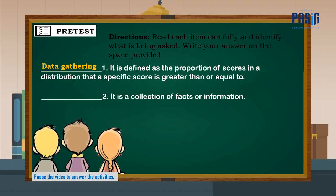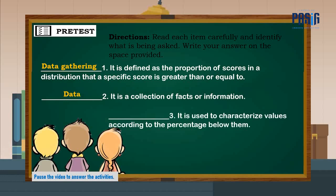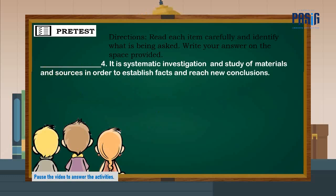Number two: it is a collection of facts or information. The correct answer is data. Number three: it is used to characterize values according to the percentage below them. The correct answer is percentile of group data. Number four: it is a systematic investigation and study of materials and sources in order to establish facts and reach new conclusions.